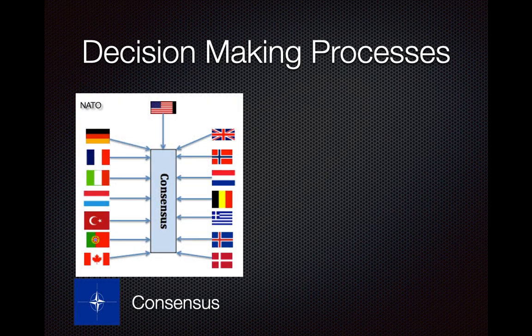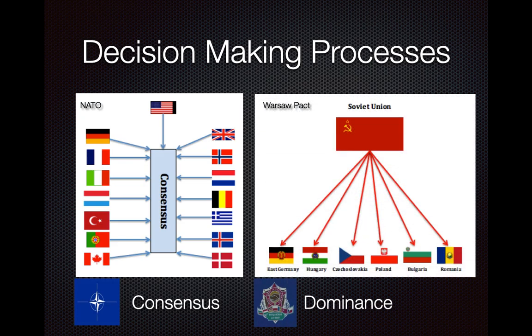NATO and Warsaw Pact have very different decision-making processes. NATO's process is called consensus — no matter how powerful your country is, everyone has to come to agreement before you do something. So after orientation today, you'll want to discuss situations and what you're comfortable doing ahead of time, because there may not be a lot of time. The Warsaw Pact is more of a dominant situation — Eastern Bloc countries give input, but the Soviet Union makes the decisions, giving them a much quicker process.